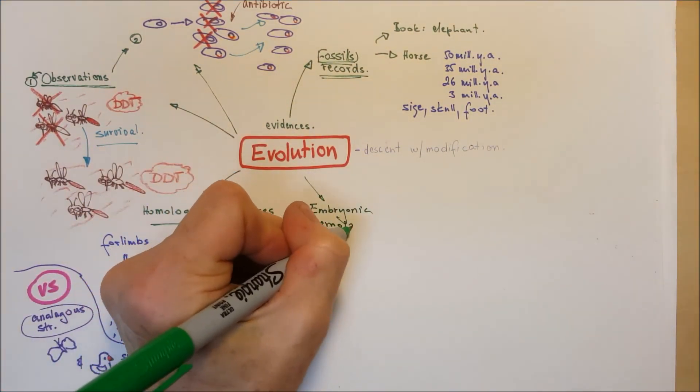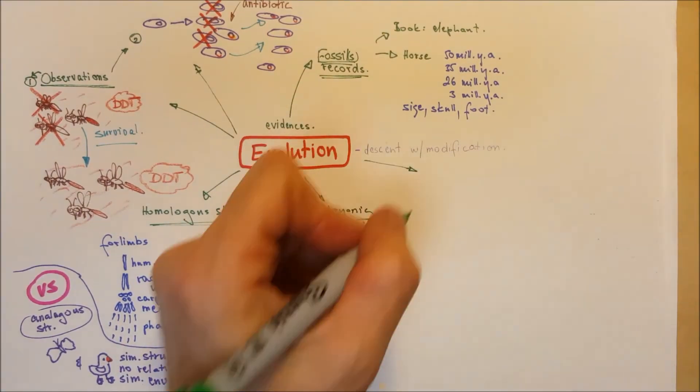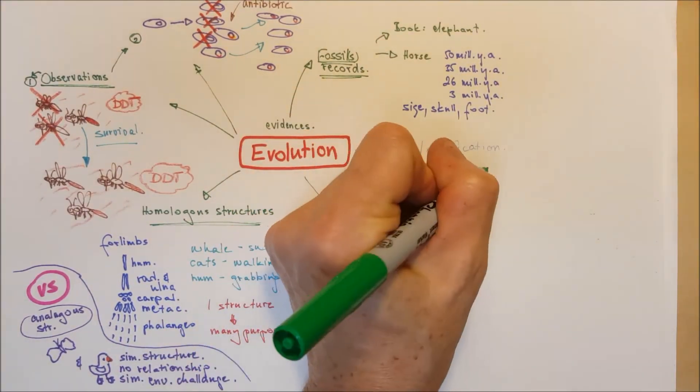The other evidence is the embryonic homologous. In utero, the development of vertebrae are pretty much the same. The post-anal tail is present.